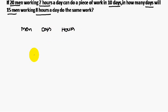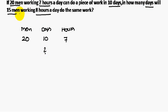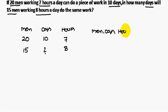For the first statement: men = 20, days = 10, hours = 7. The question mark is the number of days. For the second statement: men = 15, hours = 8. Always remember: men, days, and hours — the three values should be together for any statement.